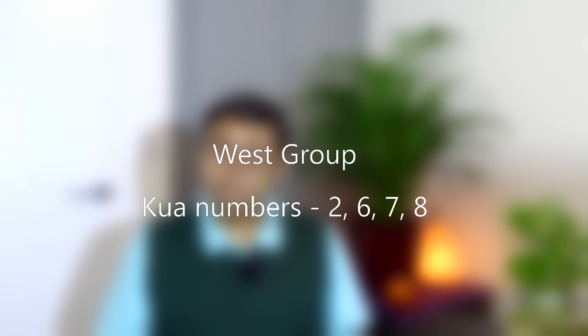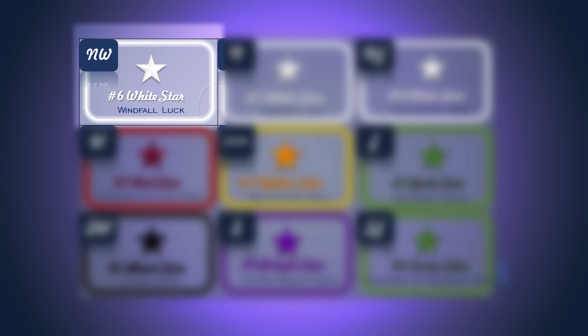If you belong to the west group, which means if your personal Kua number is 2, 6, 7 or 8, then activate the north-west sector of your house instead. This will bring you heavenly assistance, coincidences and windfall luck.